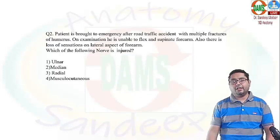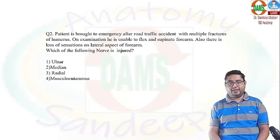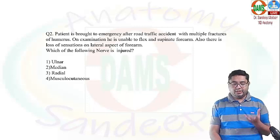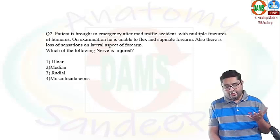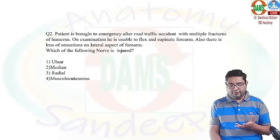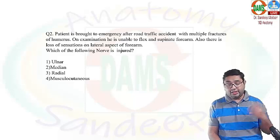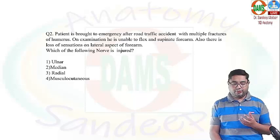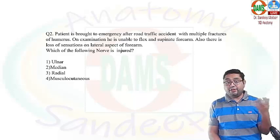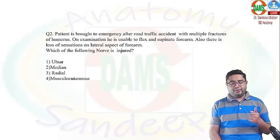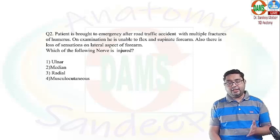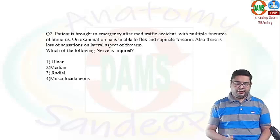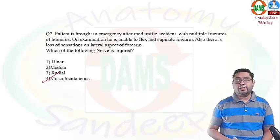The question: a patient has been brought to the emergency after a road traffic accident. On examination, the patient is unable to flex the forearm or supinate the forearm. There is a history of multiple fractures of the humerus and loss of sensation over the lateral aspect of the forearm. The question asks which nerve is injured — the ulnar nerve, median nerve, radial nerve, or the musculocutaneous nerve.